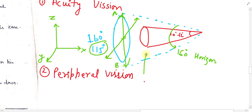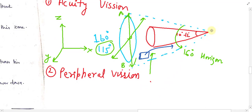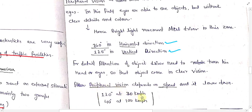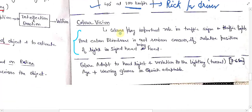If a good amount of intense light or any object with good intensity of light enters the peripheral region, it will be directly seen by a driver, but the detail of that object will be less compared to acuity vision. When the speed of the driver increases, peripheral vision will reduce and shrink. At 30 km/h the peripheral vision is 110 degrees, but at 100 km/h the peripheral vision decreases.